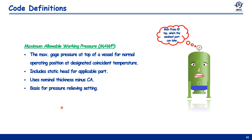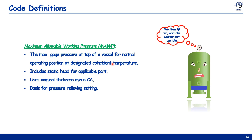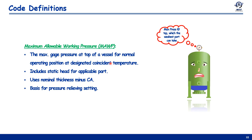One key concept about MAWP is that it can simultaneously be a maximum value as well as a minimum value. It is a maximum value in the sense that it is the maximum pressure a component can bear. It is also a minimum value because we calculate MAWP for each component individually and then select the least value among them.